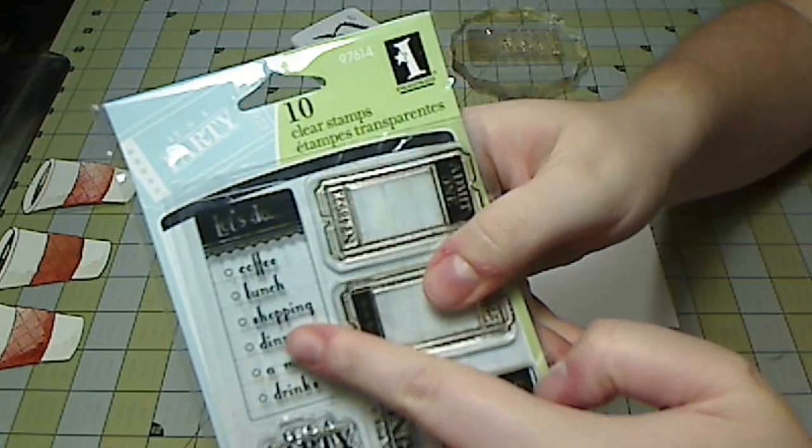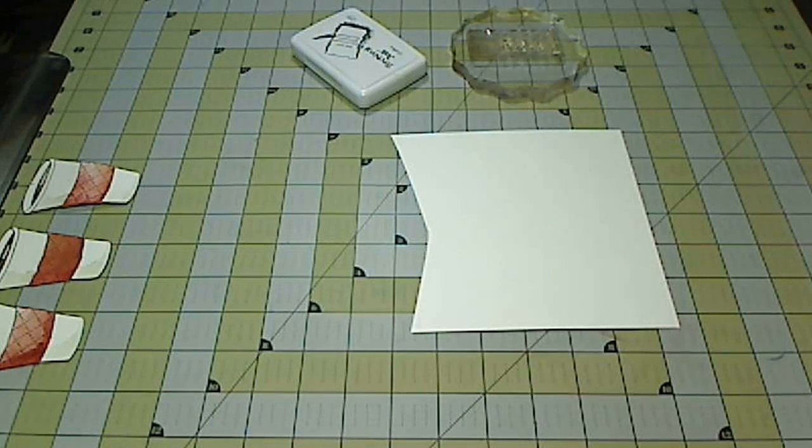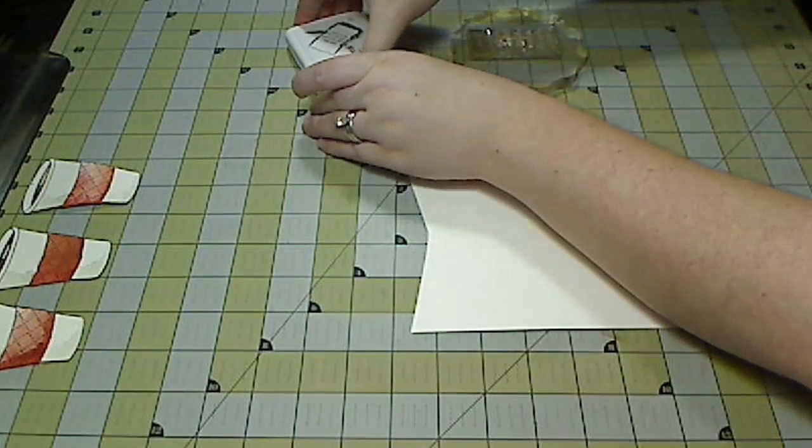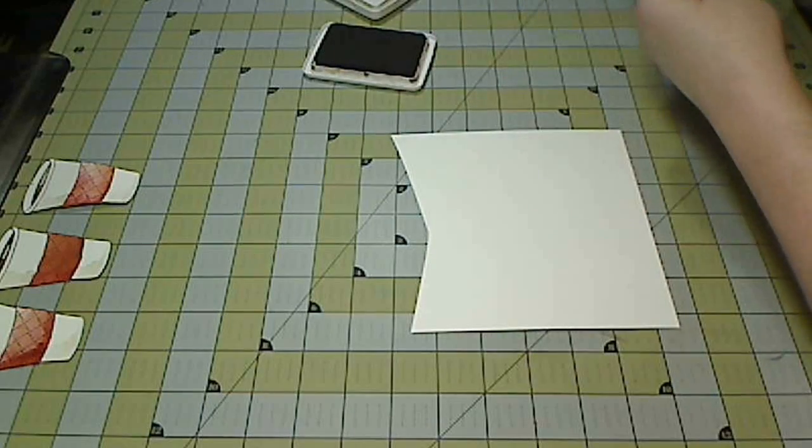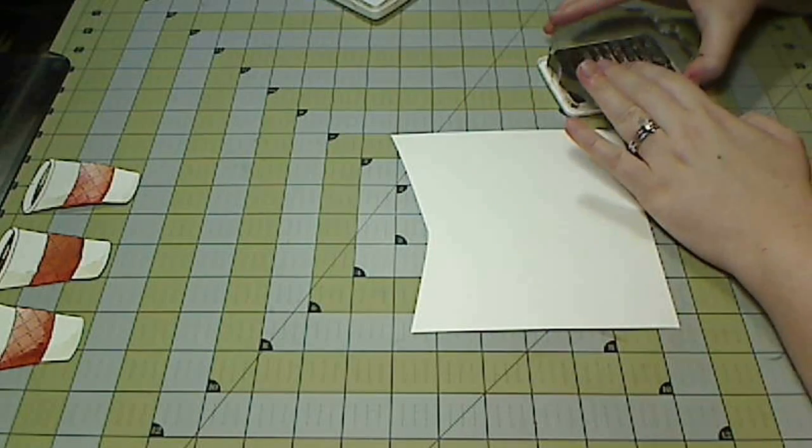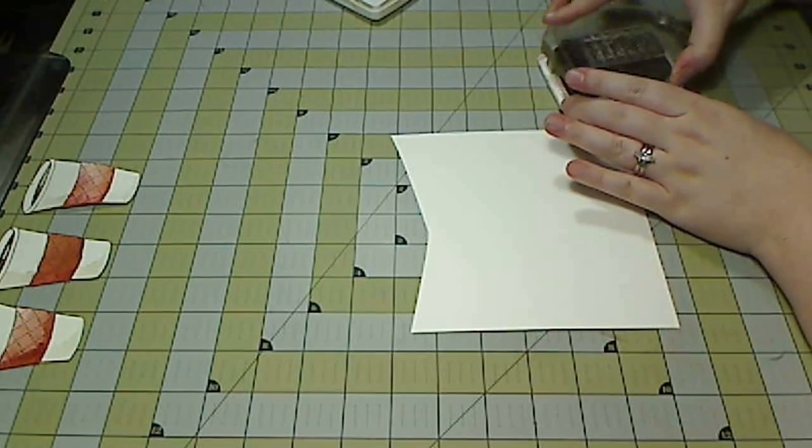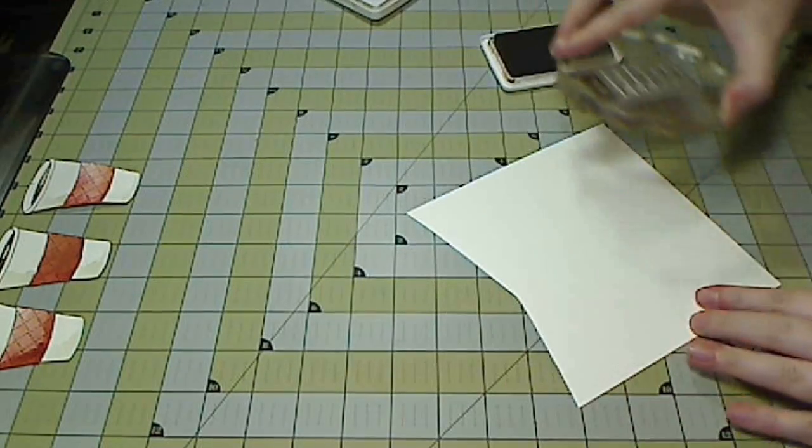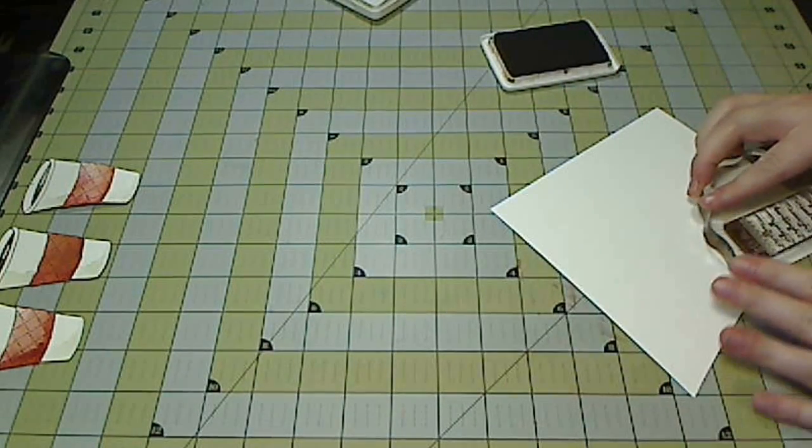And now I have more watercolor paper and I'm going to be using this stamp from Inkadinkadoo which says let's do and then there's a bunch of choices: coffee, dinner, drinks, and I'm going to check coffee. And I'm stamping it on the same watercolor paper just so that it'll match the cups.